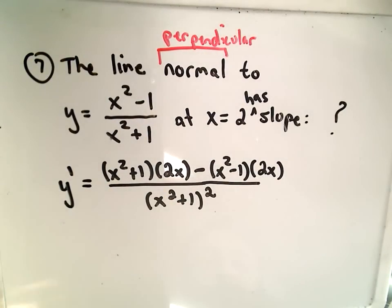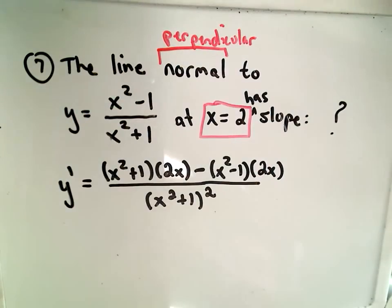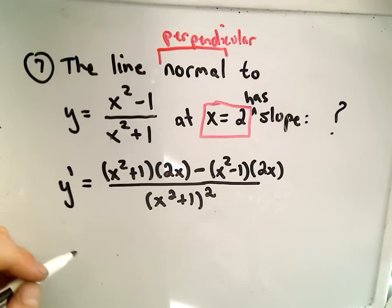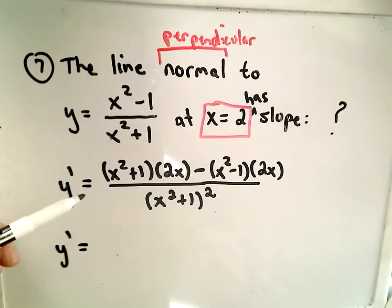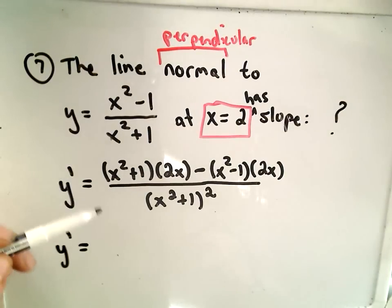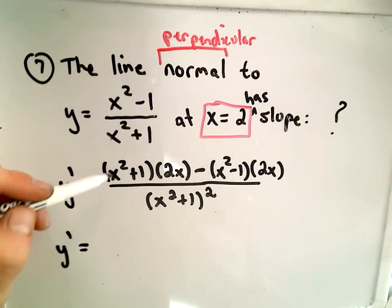They want us to evaluate this at x equals 2. So the first thing we're going to do is find the slope of the tangent line, and once we have that it's easy to get the slope of the normal line. You could simplify all of this down, but there's really no point — I'm just going to plug in x equals 2.